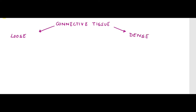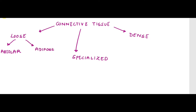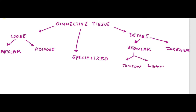Loose connective tissue can be further divided into areolar and adipose tissue. Dense connective tissue can be divided into regular and irregular. Dense regular connective tissue can again be classified into tendons and ligaments. Specialized connective tissue can be classified into skeletal and fluid — skeletal meaning it is solid, fluid being gas or liquid. Skeletal connective tissue includes bones and cartilages, and fluid connective tissue includes blood and lymph.